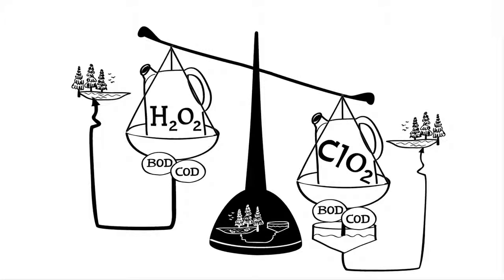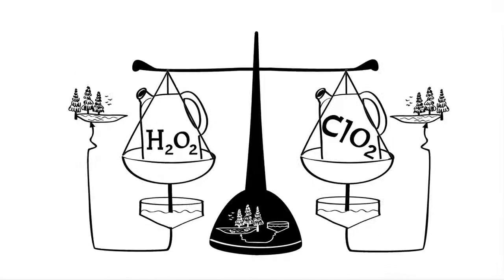Having said that, releases of oxygen demanding substances that are measured as BOD, or Biochemical Oxygen Demand, and COD, or Chemical Oxygen Demand, are still present, as they are more affected by the pulping operations at the mill and less affected by bleach plant operations. These, however, can be treated during wastewater treatment.